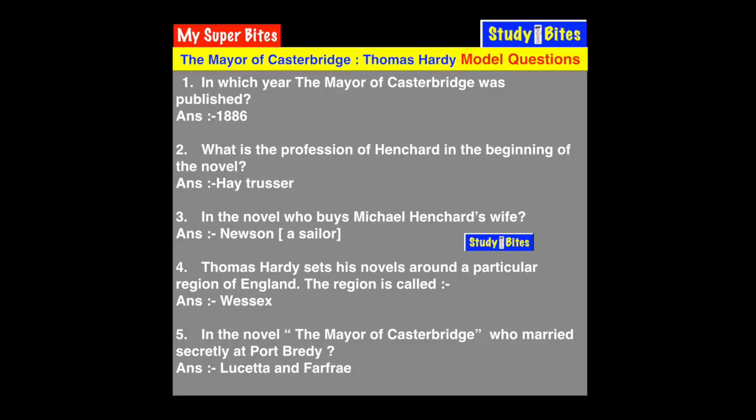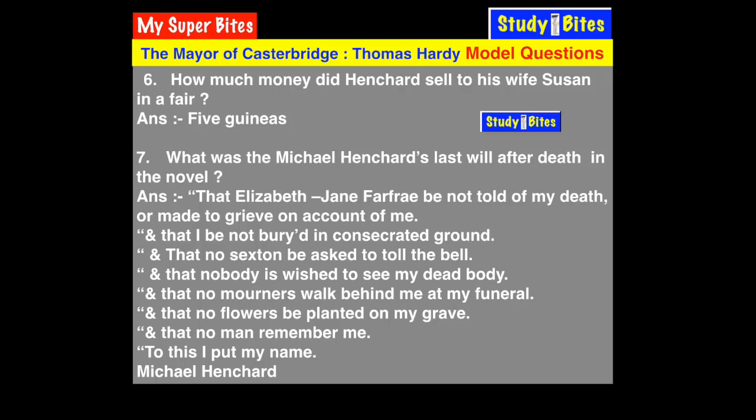Question 6: How much money did Henchard receive when he sold his wife Susan at the fair? The answer is just five guineas — a very small amount of money. He sold his wife and child for only five guineas.